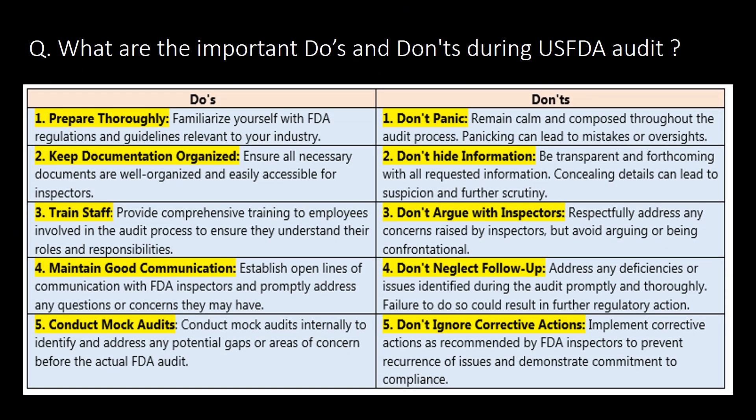What are the important do's and don'ts during a USFDA audit? Important do's include: prepare thoroughly, keep documentation organized, train staff, maintain good communication, and conduct mock audits. Important don'ts include: don't panic, don't hide information, don't argue with auditors or inspectors, don't neglect follow-up, and don't ignore corrective actions.